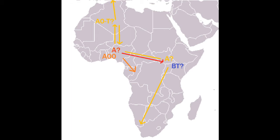You can see I've put A with a question mark at both sides there. In red, you have the location that is proposed for the original Y-DNA Adam. In yellow, I've put a second alternative over there in East Africa. There is A in all of these areas.